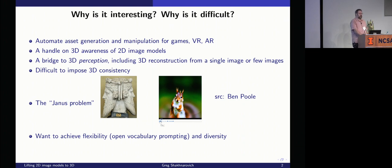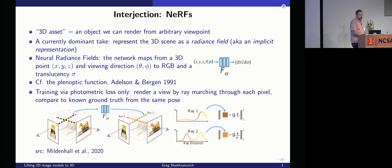Of course, for anything we do here, we want to make sure that we can have really open-world kind of vocabulary. We want to generate, ideally, any kind of thing we might want, and not just specific categories. And, ideally, we would like to have some diversity, being able to generate multiple different possible objects for the same prompt. So, what do I mean by 3D objects? For the purpose of this talk, at least, when I talk about 3D objects, or 3D assets, you can think of it as some kind of mathematical object, which allows us to render views of the desired 3D thing from arbitrary viewpoints.